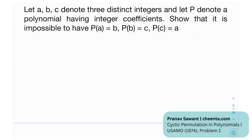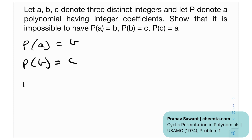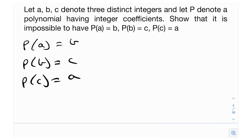The problem states: let a, b, and c denote three distinct integers, and let p denote a polynomial having integer coefficients. Show that it is impossible to have p(a) = b, p(b) = c, and p(c) = a. There's a pretty cool cyclic structure being formed here. This is impossible for p(x) a polynomial having integer coefficients — in other words, p(x) belongs to ℤ[x], meaning p(x) has integer coefficients.